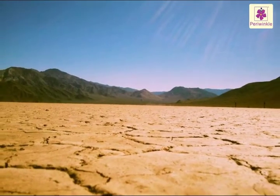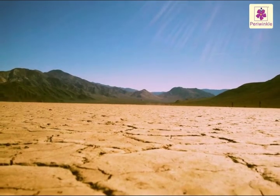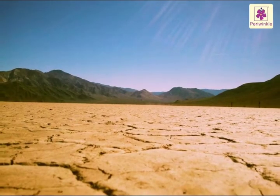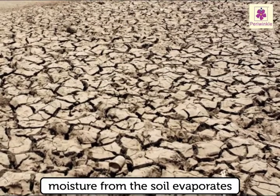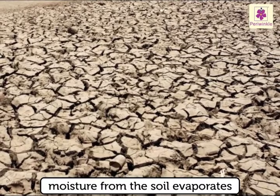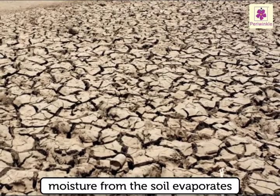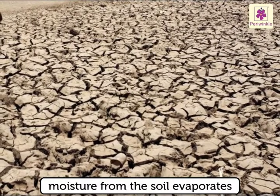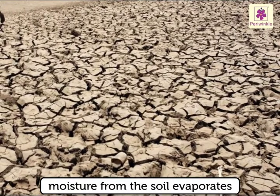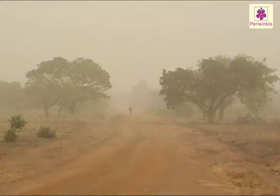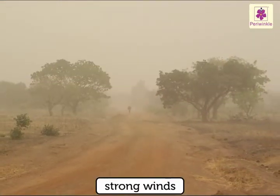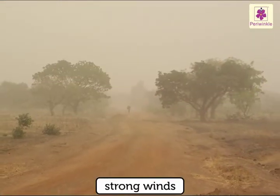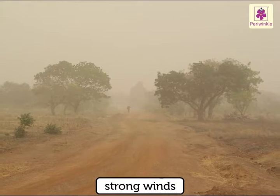the land is exposed to the heat of the sun. Moisture from the soil evaporates, making the soil dry and dusty. Strong winds blow away the soil, exposing the stones and rocks beneath.